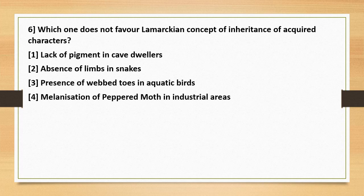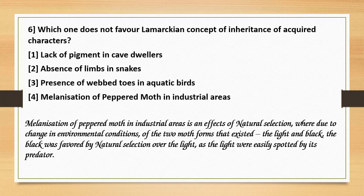Question number 7 (skipping Q6). Melanization of peppered moth in industrial areas is an effect of natural selection. Due to change in environmental conditions, of the two moth forms that existed — the light and the black — the black was favored by natural selection over the light, as the light-colored moths were easily spotted by predators due to industrialization. This does not favor the Lamarckian concept of inheritance of acquired characters. So the correct answer is option 4.